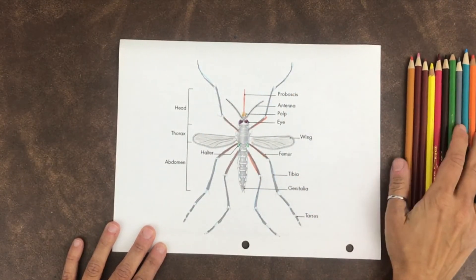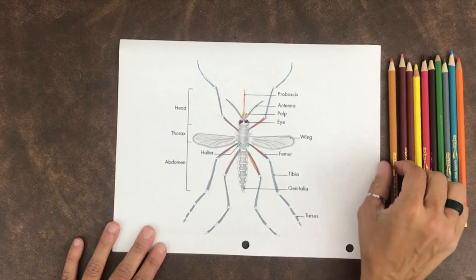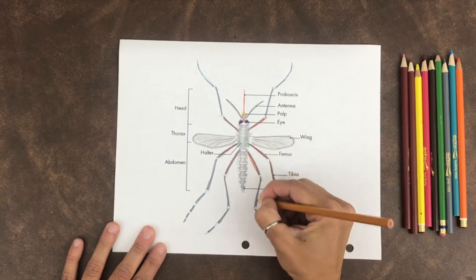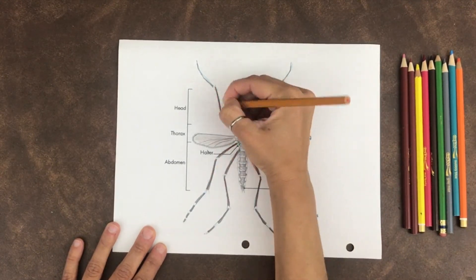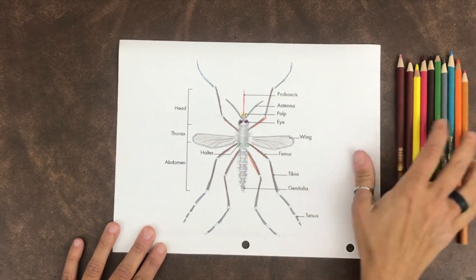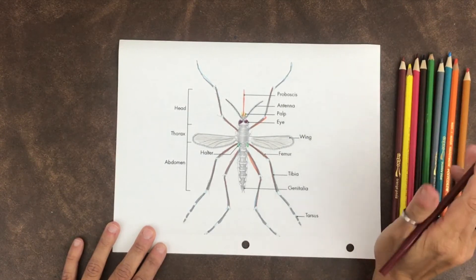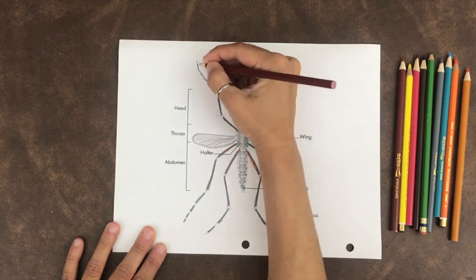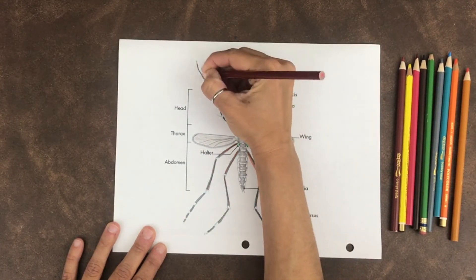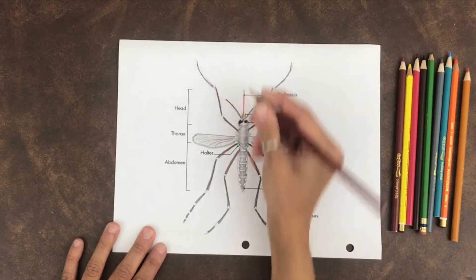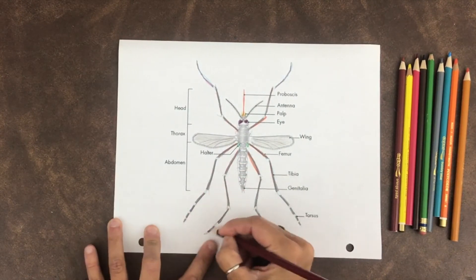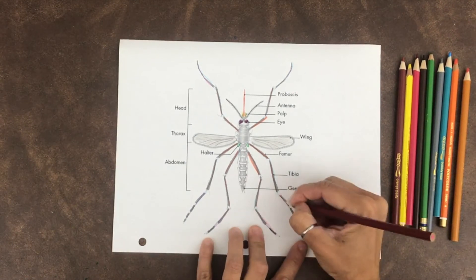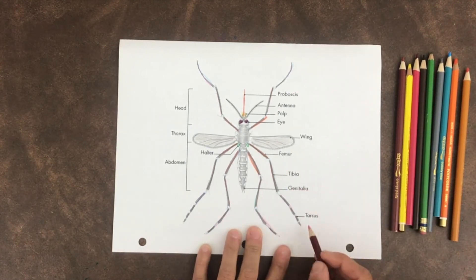Then the middle part of the leg is called the tibia. We also have a tibia in our bones. The tarsus is the end of the leg, and that helps mosquitoes stand and walk on water. Mosquitoes' legs are made up of three parts. This part I'm coloring pink is called the tarsus.